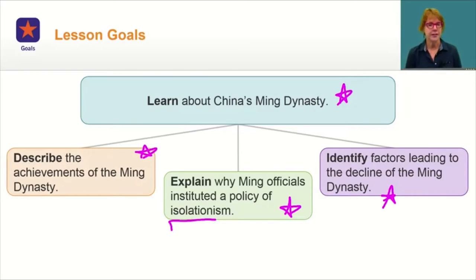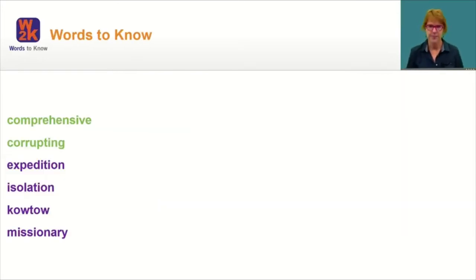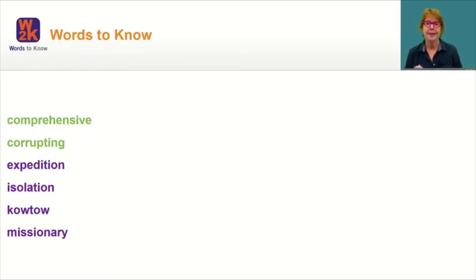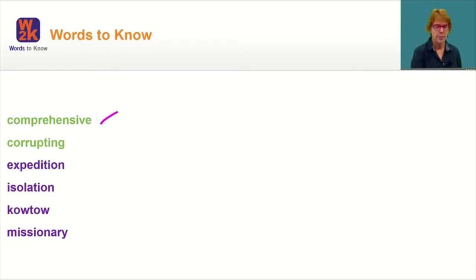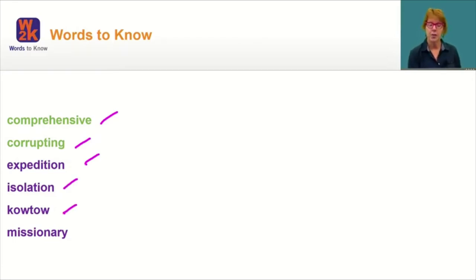Next, we'll take a look at today's lesson vocabulary words. Take a moment to write these important words into your e-notes, and be sure to check the definitions in your glossary. Keep your eyes peeled for them as you move through the lesson. The green words appear throughout all of your lessons, and the purple words are specific to this lesson. We have: comprehensive, corrupting, expedition, isolation, kowtow, and missionary. So, let's jump right in.